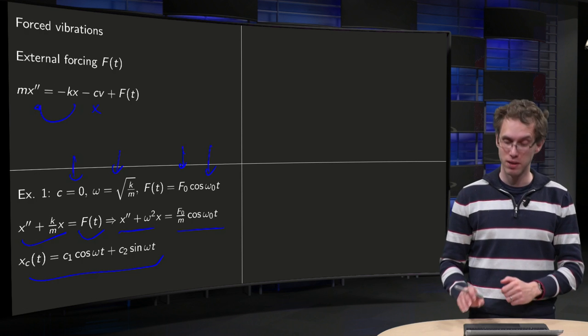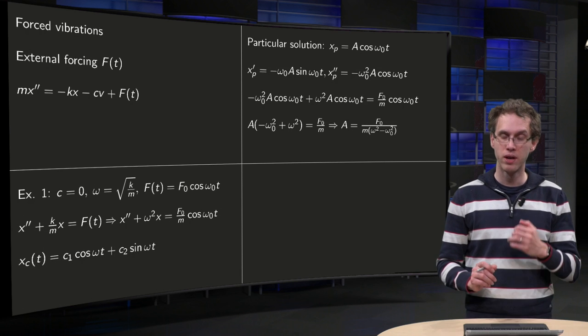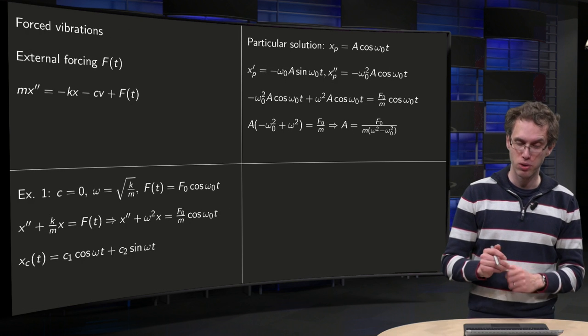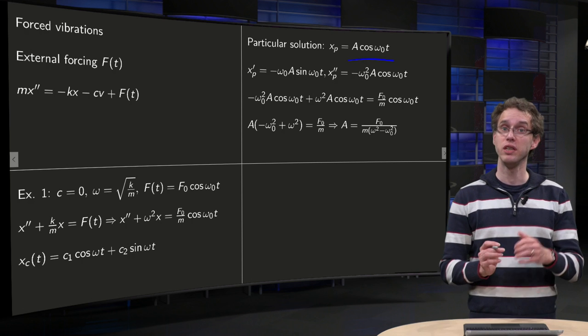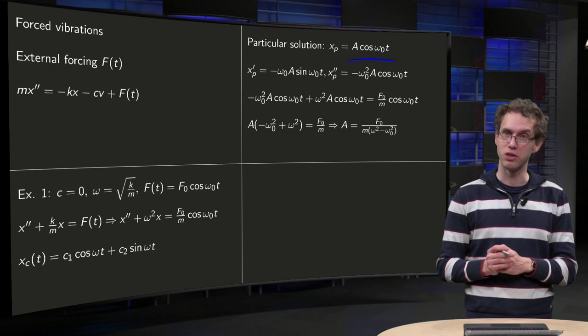But the interesting part is in the particular solution. So we take a trial solution, A times cosine omega_0 t, where we have to determine A as our particular solution.